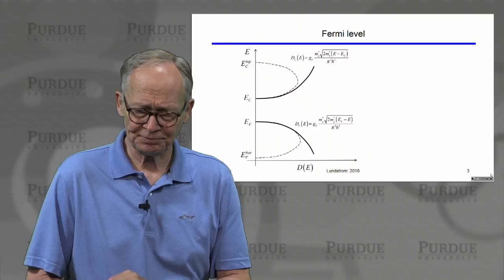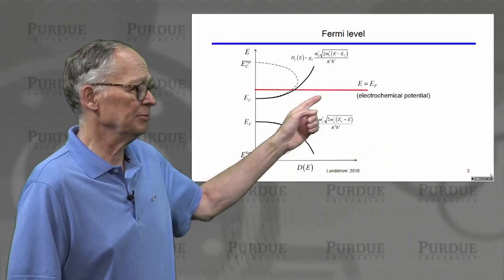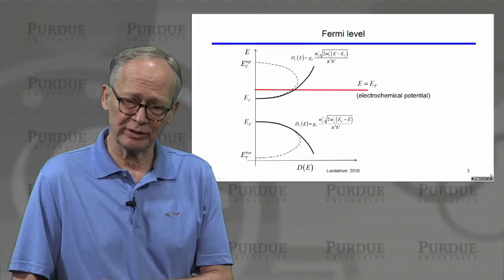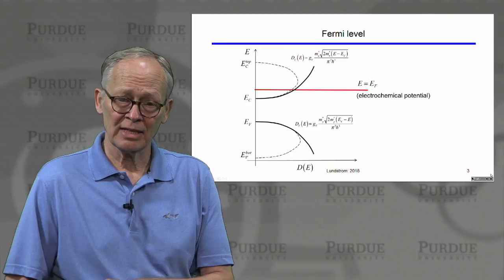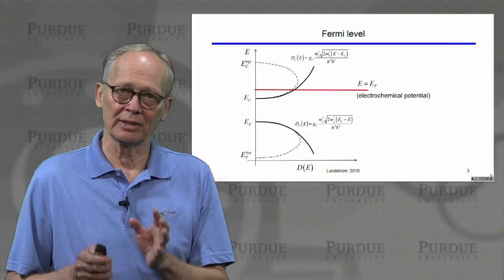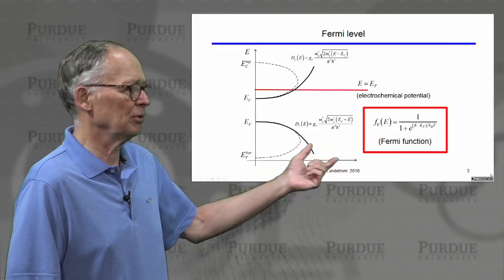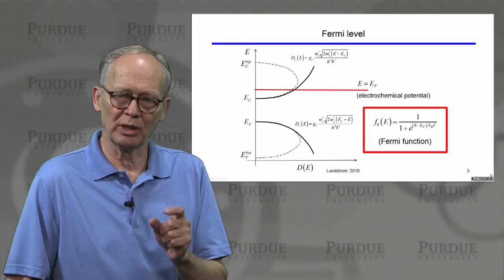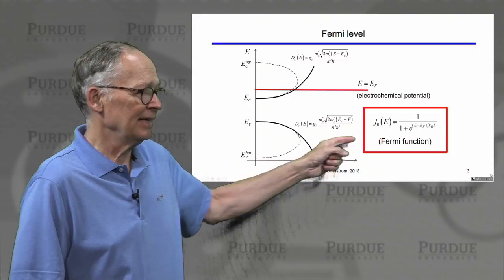Now we can draw a line — we're going to call it the Fermi level, sometimes called the electrochemical potential or just the chemical potential. Below that line, the states will be mostly filled; above that line, the states will be mostly empty. This is an important concept: where is the Fermi level in the semiconductor? There is a very simple equation that describes the probability — a number between zero and one — that a state at any energy is occupied by an electron. That simple equation is the Fermi function.